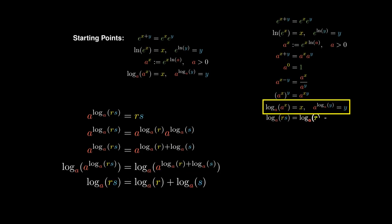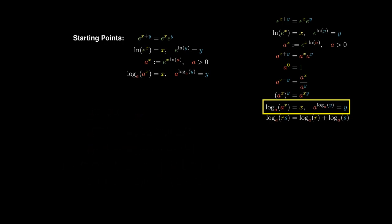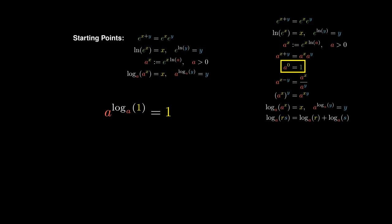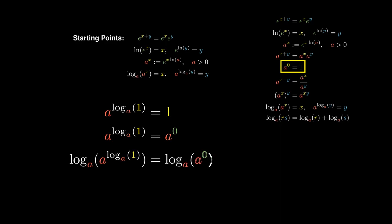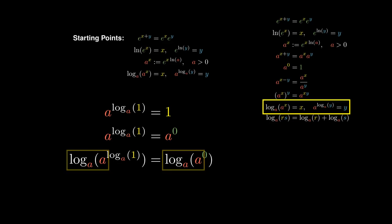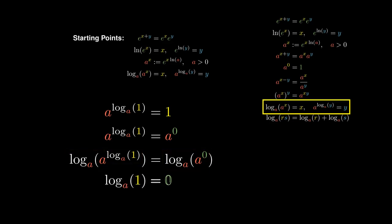In particular, if we were to consider a to the log base a of one, since exponentials and logarithms cancel out, the right-hand side reduces to one. But we have previously seen that one can be written as a to the zero. We can now take logarithms on both sides, and since logarithms and exponentials cancel out, we obtain that the logarithm of one must be zero. Furthermore, this is true of any positive base a.